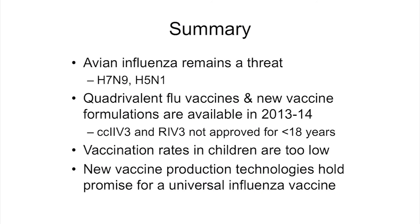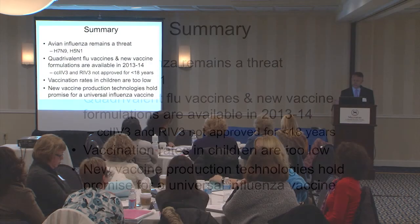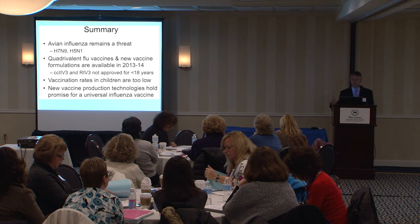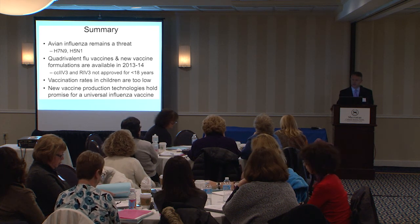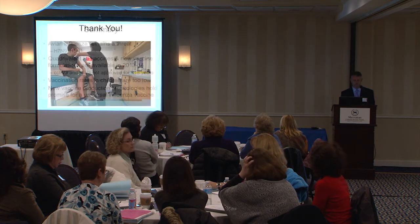In summary: avian flu remains a threat — both H7N9 and H5N1 are circulating and causing human cases, so ask patients about risk factors. Quadrivalent vaccines and new formulations are now available for this flu season, but cell culture and recombinant vaccines are not yet approved for patients under 18. Overall vaccination rates remain too low — make it your mission to vaccinate all patients over six months and their family members. New vaccine production technologies hold real promise for a universal influenza vaccine, which would be extremely helpful for the future.